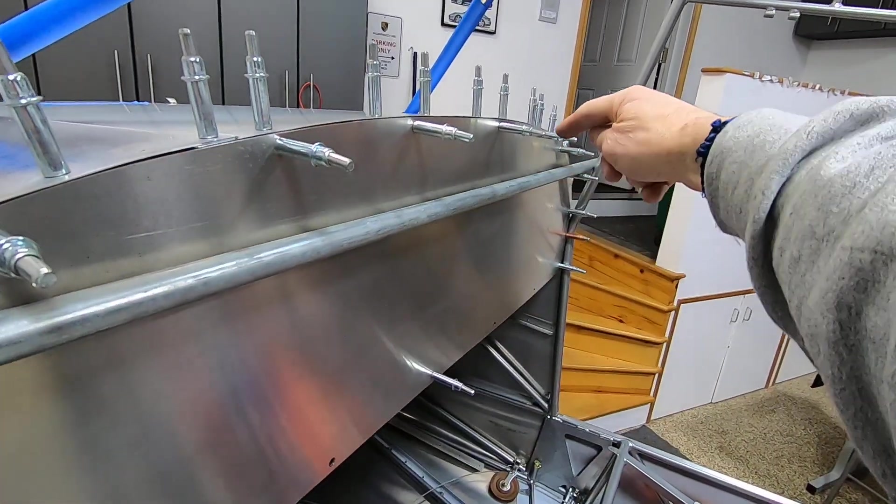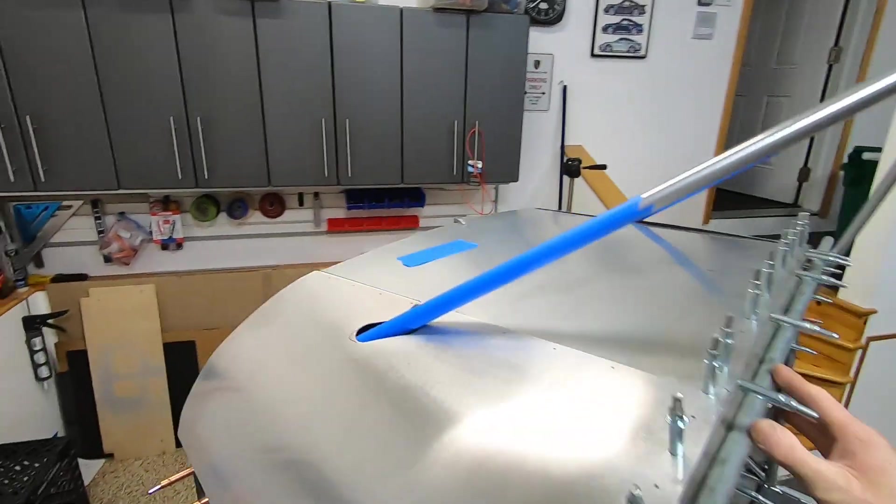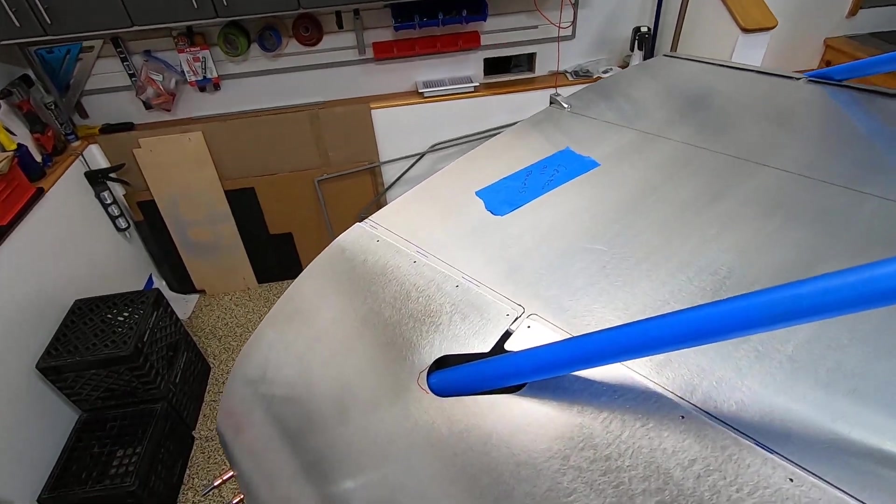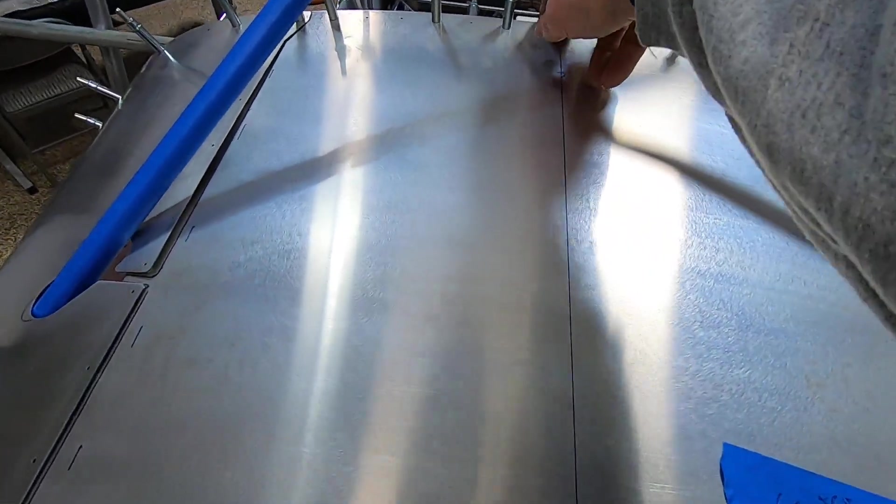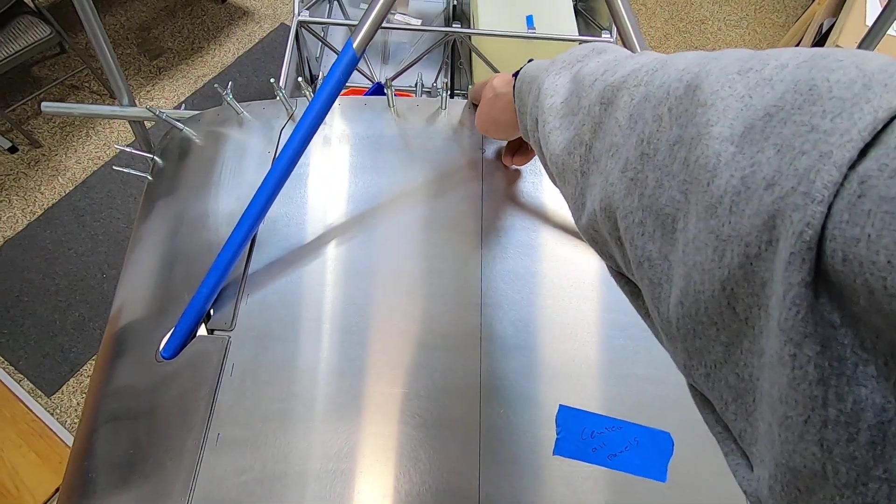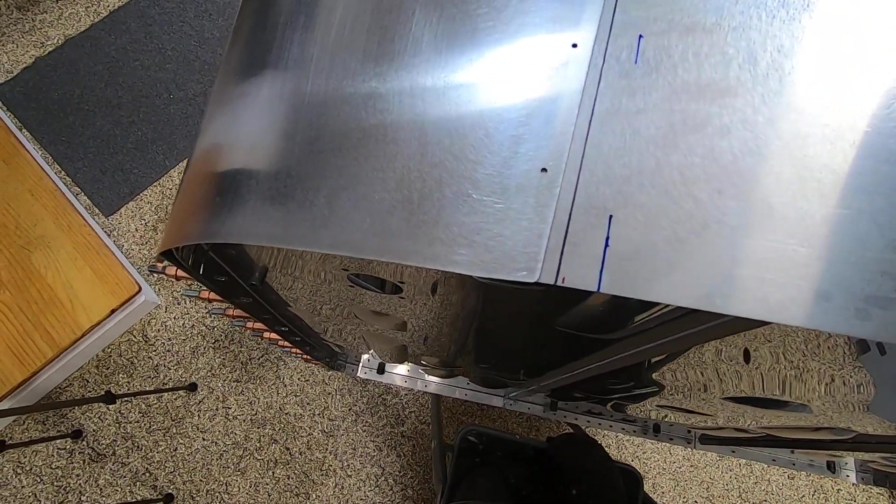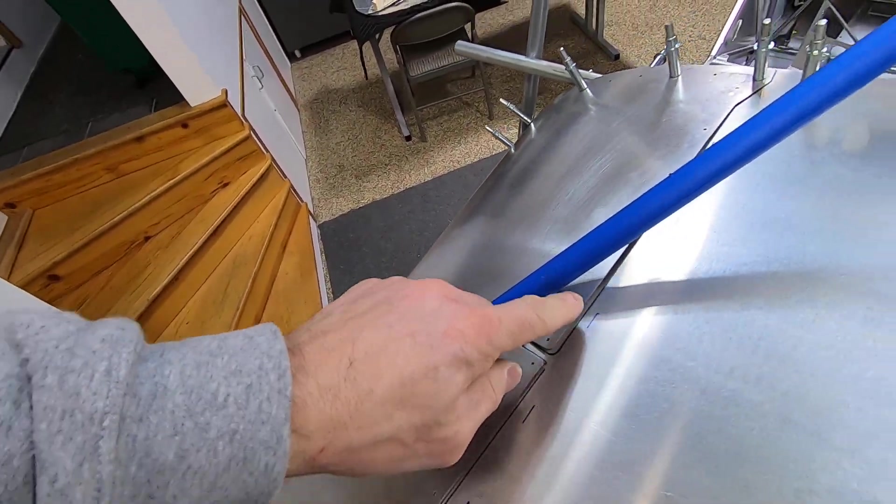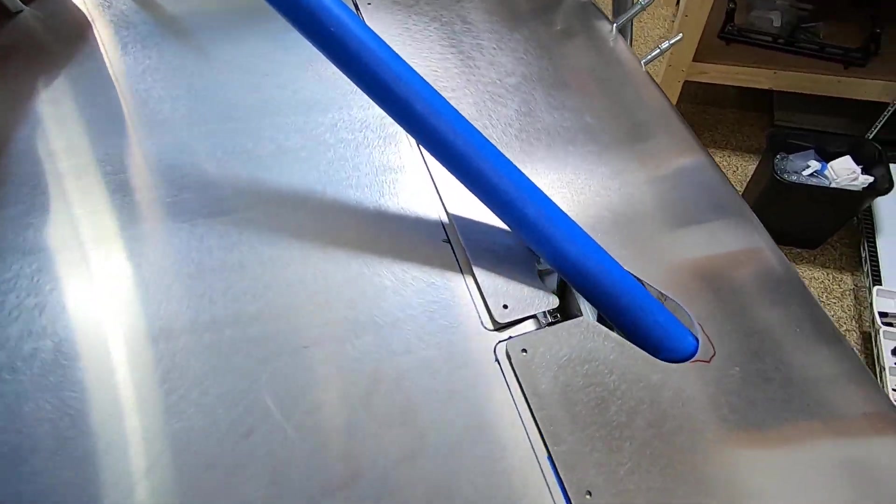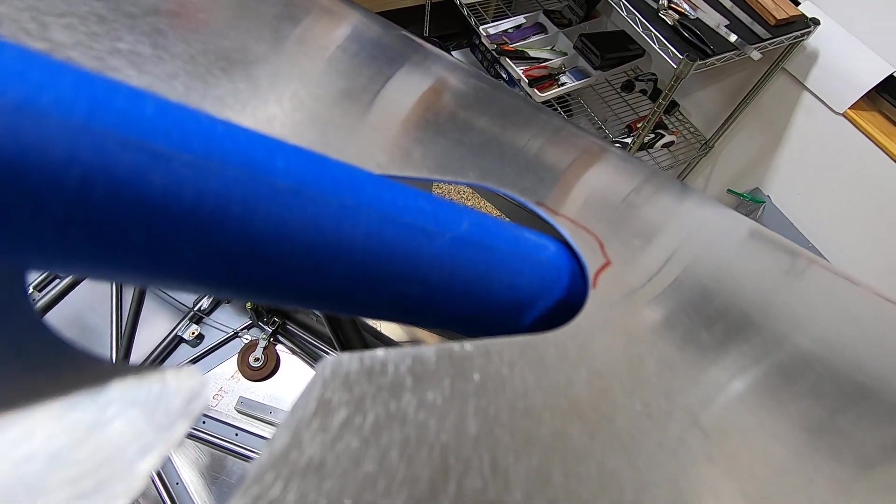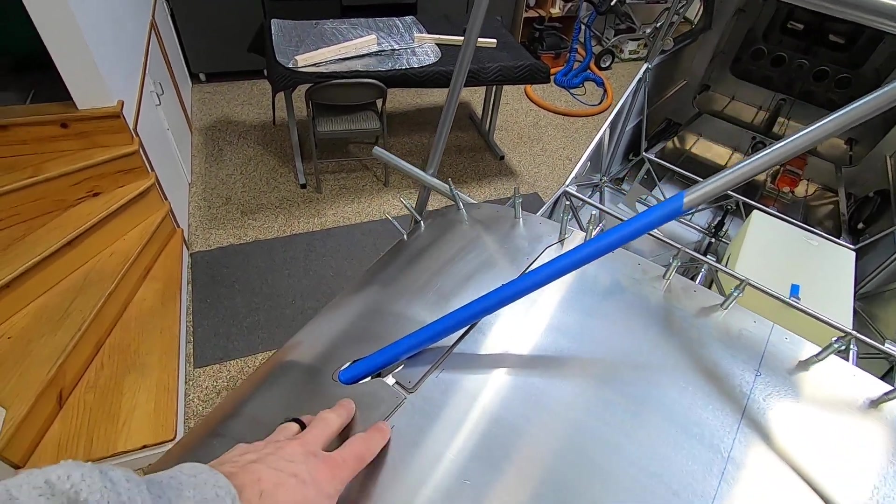One more thing that's kind of odd is if you look at the instrument panel, it's not nearly as bad as before, but the middle of it actually bows inward. You can see up top how the skins move if you push it out.